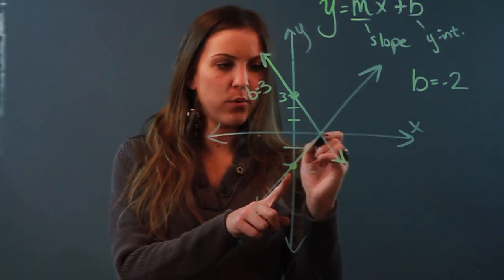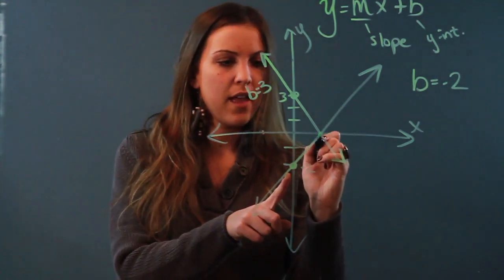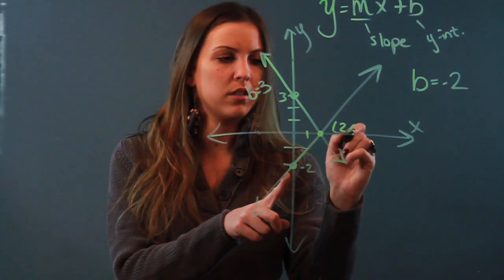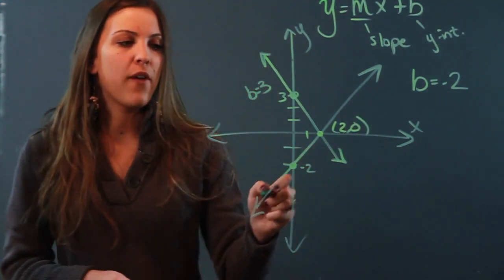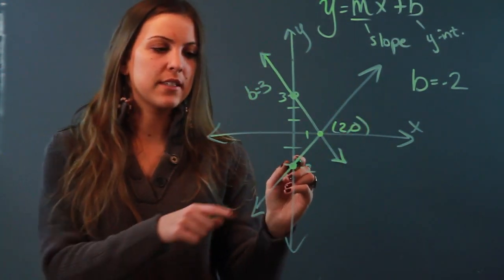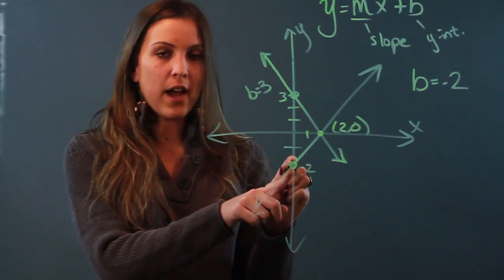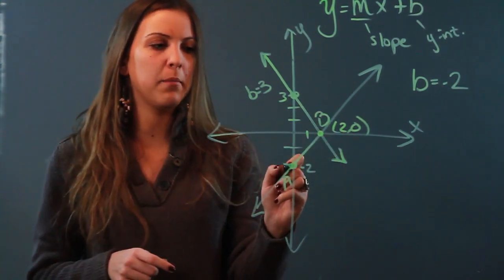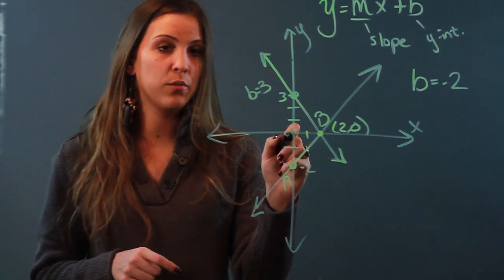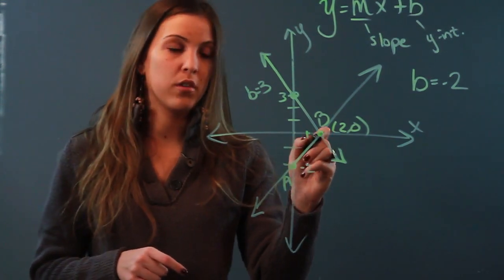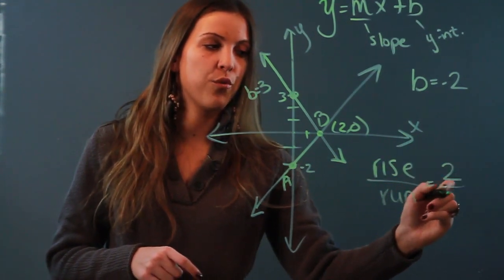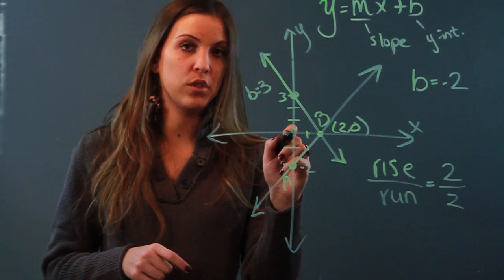your line. Let's say I have this point and this point right here, and we'll estimate that to be (2,0). If I want the slope of this line, I have to see how many rises and runs it takes me to get from point A to point B. From point A to B, I have to go up 2 and then over 2, so my rise over my run is 2 over 2.